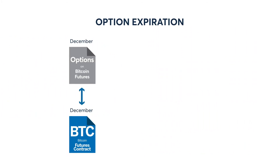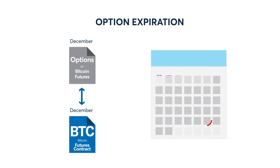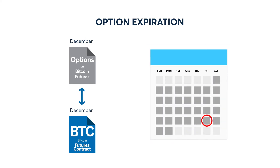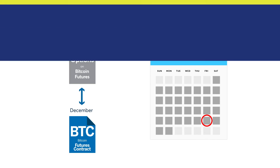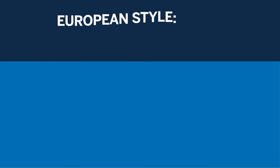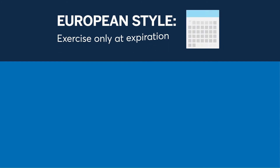Options on Bitcoin futures will expire the same day as their underlying Bitcoin futures contract expires, which is the last Friday of the contract month. The options deliver the futures contract that then instantaneously expires into cash. These options are European style, which means they can be exercised only at expiration, and therefore option sellers cannot be assigned prior to expiration.